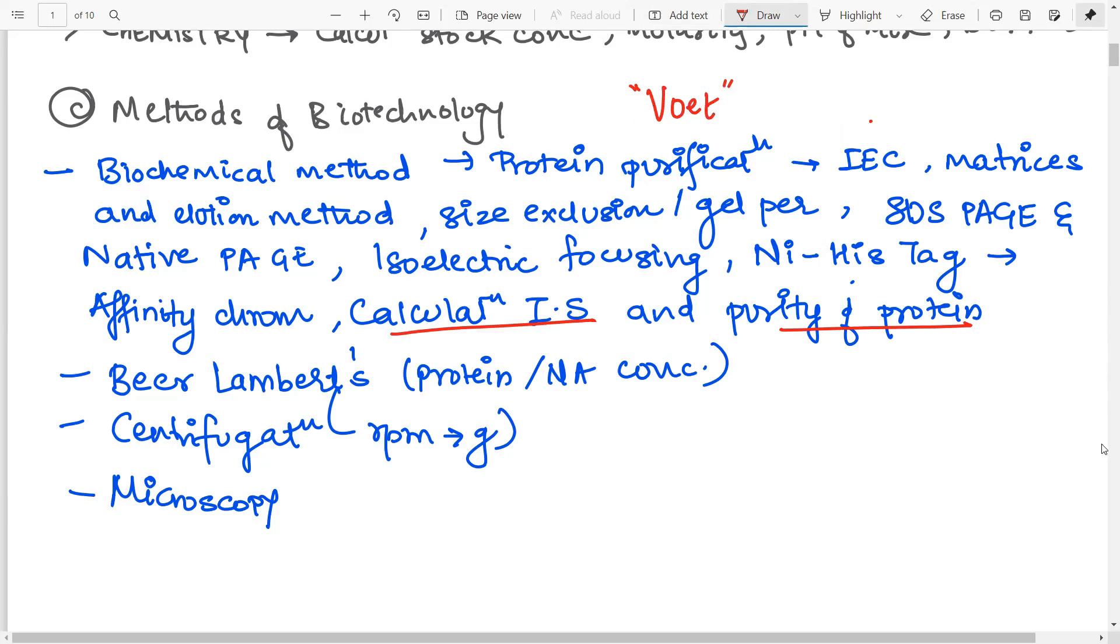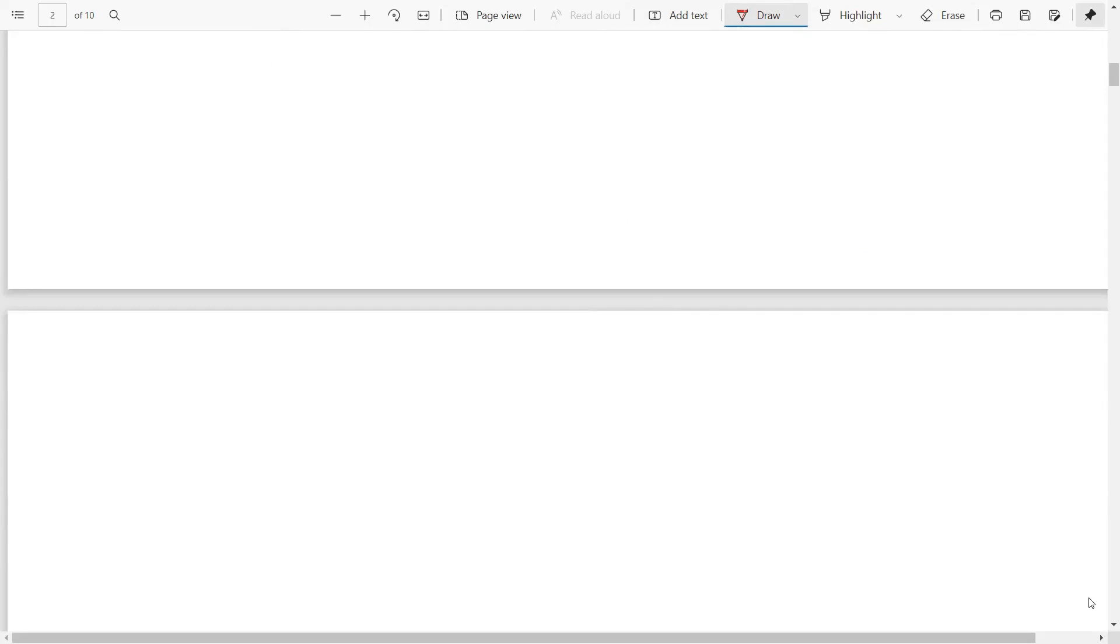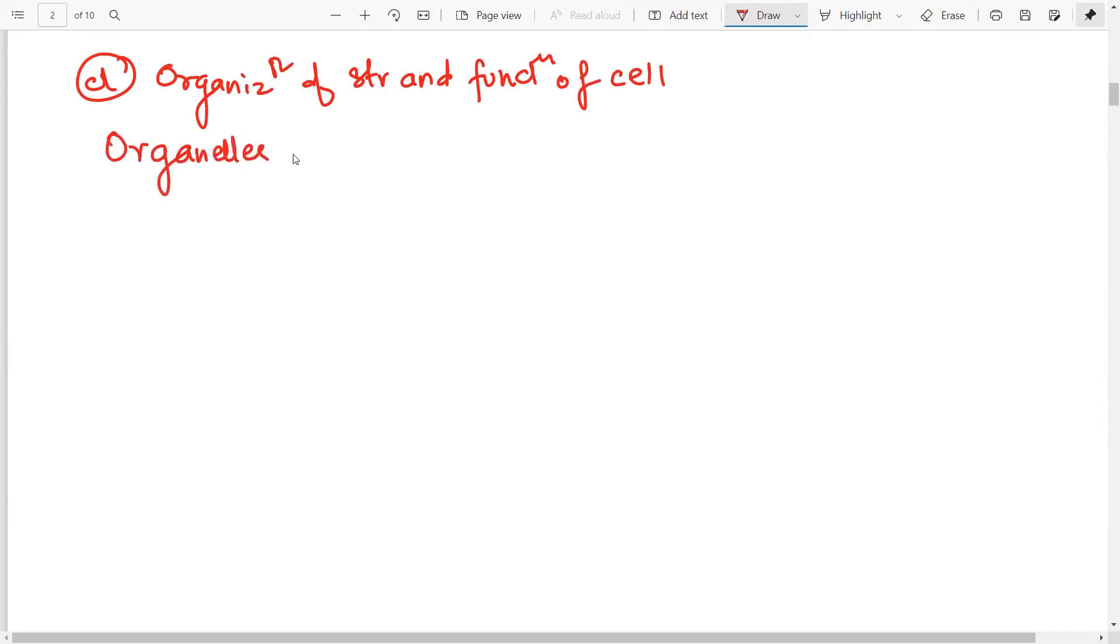Now moving on to the next one. So the next one is the organization of structure and function of cells. That is organization of structure and function. Now in this, as you can see, the topic is more of cell biology. So what do you need to do? Very important. First, you need to start with the organelles. You have to know everything about the organelles.